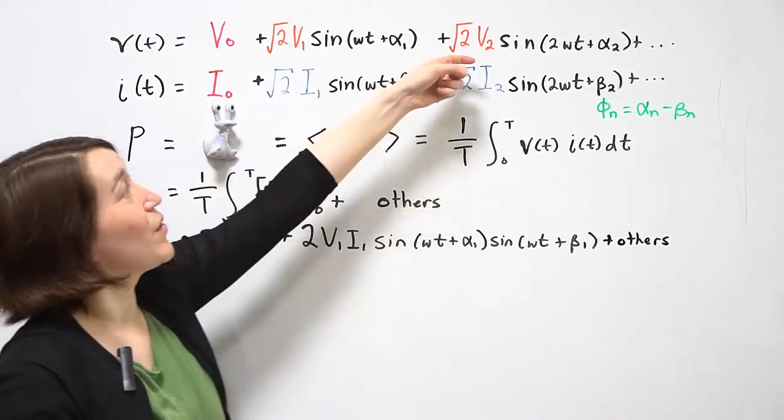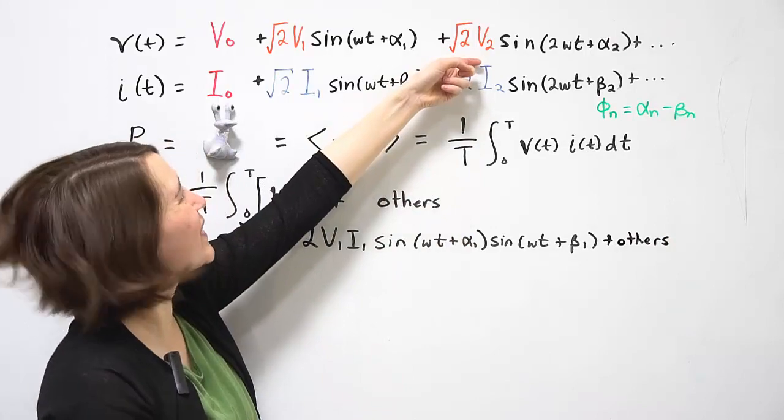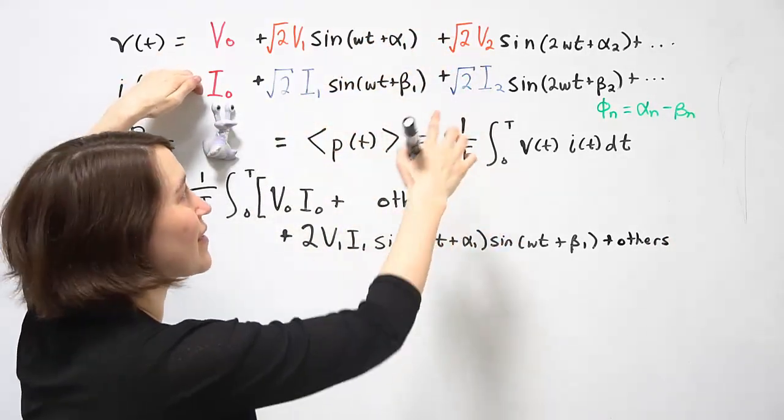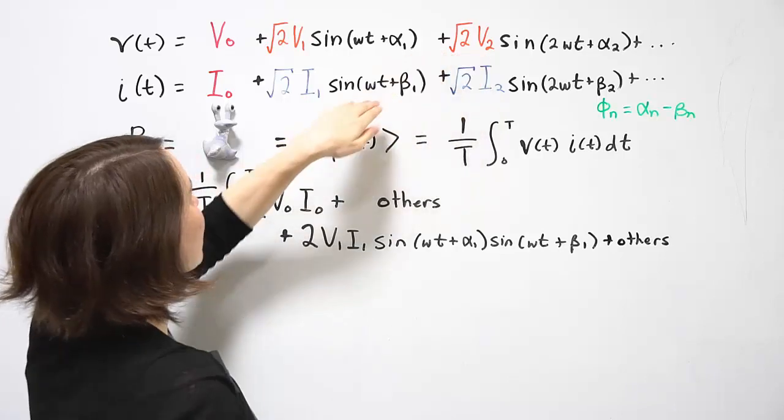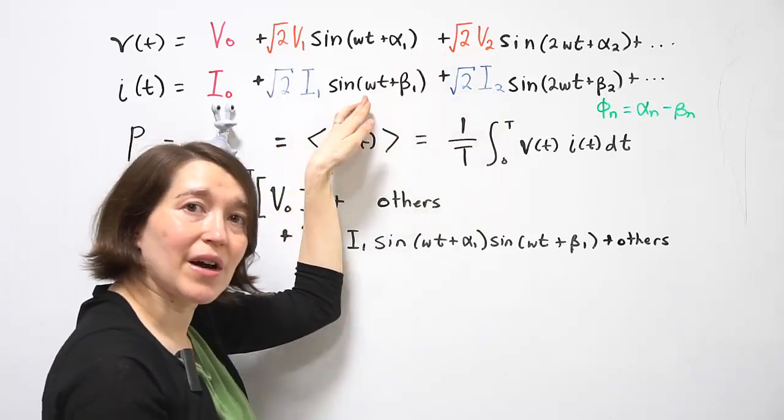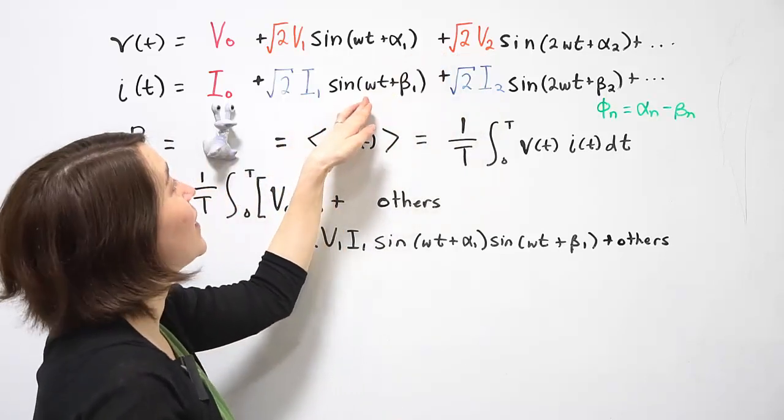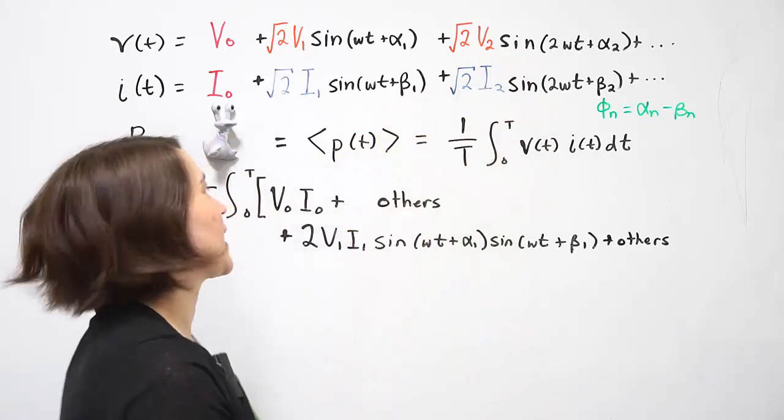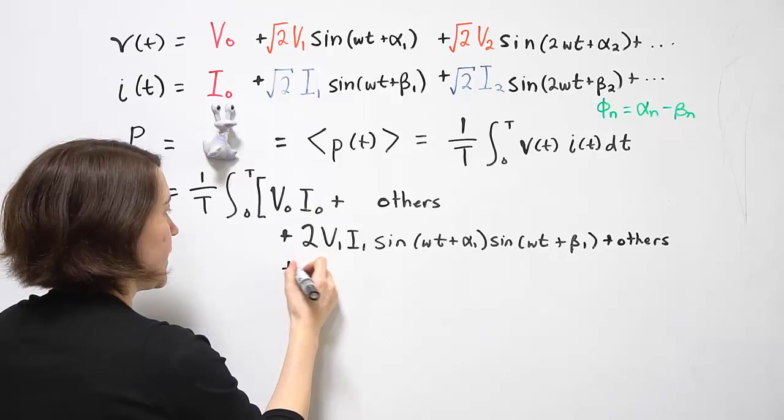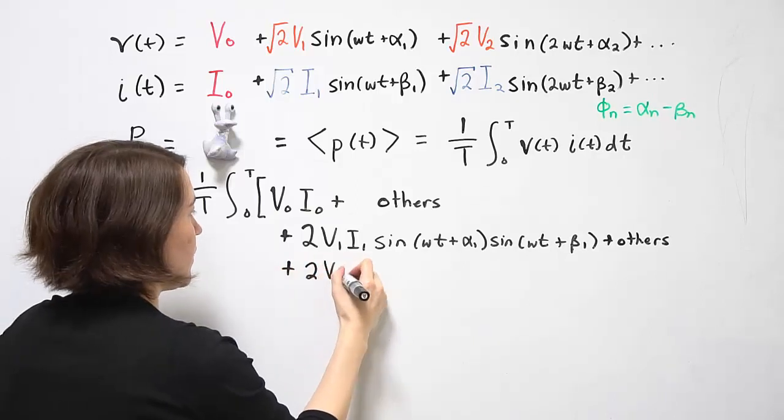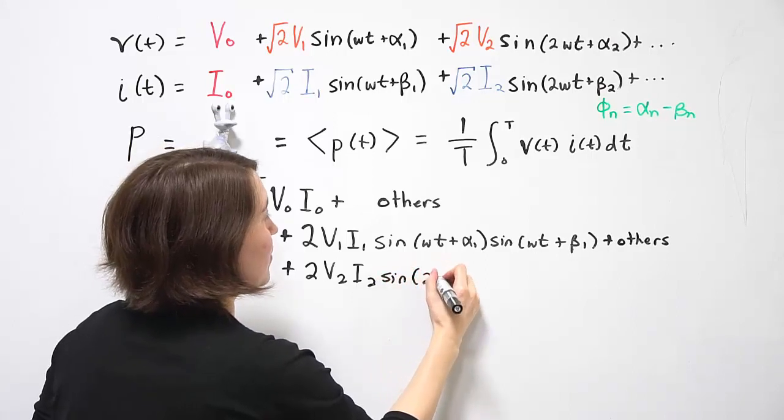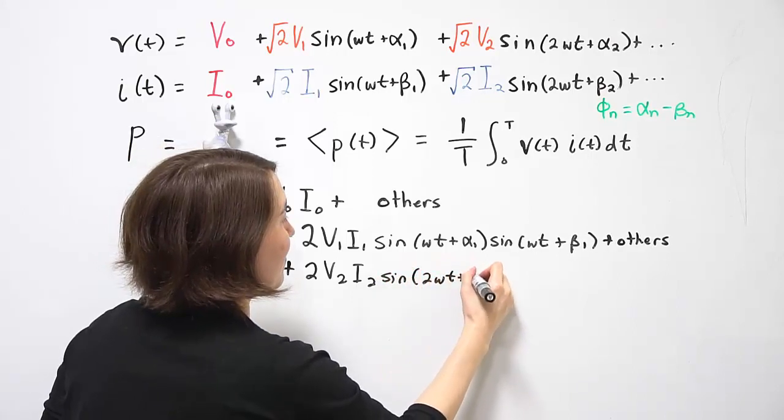Let's go on to the third term here. So multiply this by DC value. Because it's a sign, it's going to go to zero. Multiply this by a different frequency. Again, it's going to go to zero. And multiply it by the same frequency. We're going to get a component out of that. So we're going to get 2v2i2 sine of 2 omega t plus alpha 2.